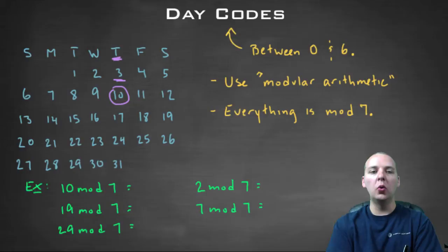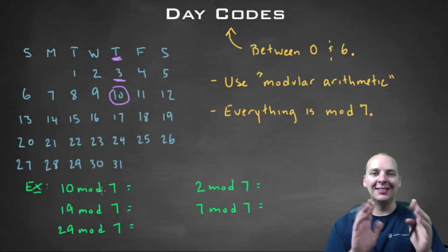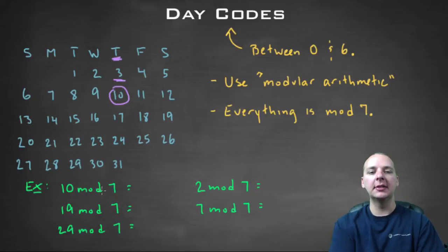So let's do a quick little quiz here. Ten modulo seven. If you take multiples of seven out to drop it into the scale between zero and six, since ten is larger than seven, you can take out seven. Ten modulo seven would be three.